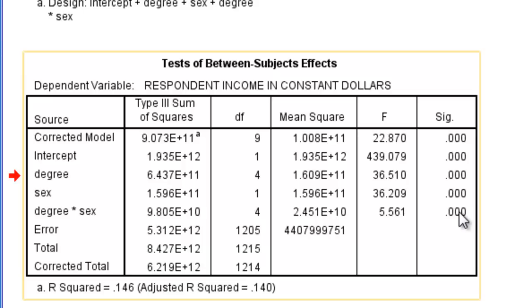There are also main effects. So for example purposes, I'll show you where those are. Sex main effect is in this row. It's statistically significant. And the degree main effect, that is also statistically significant.